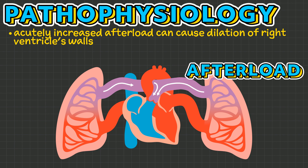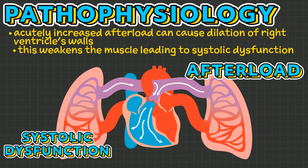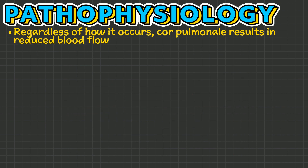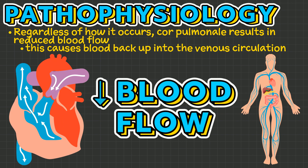On the other hand, acutely increased afterload can cause dilation of the right ventricle's walls, weakening the muscle and leading to a systolic dysfunction. Regardless of how it occurs, cor pulmonale results in reduced blood flow that causes blood to back up into the venous circulation.